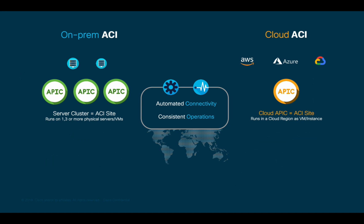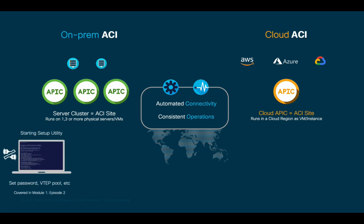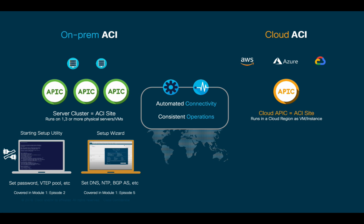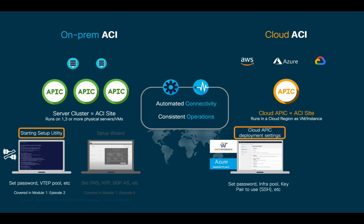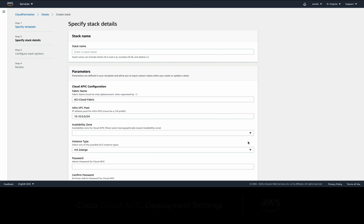If we go back to the ACI on-prem version setup process, you may remember that we used the Starting Setup Utility and Setup Wizard to perform the initial APIC configuration as covered in Module 1. For the Starting Setup Utility, we would connect to the APIC server via KVM to answer a few questions like fabric name, password, VTEP pool, and a few more. If we compare that to the Cloud APIC setup, we have to answer similar questions as part of the APIC subscription process.